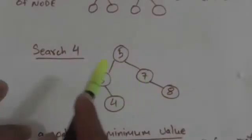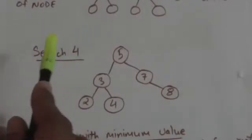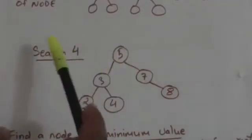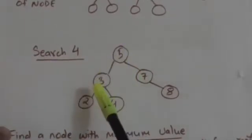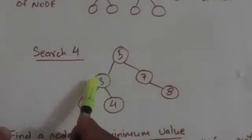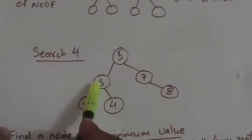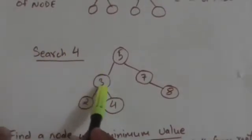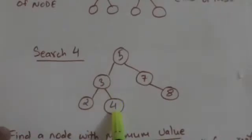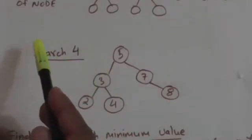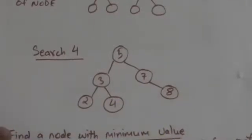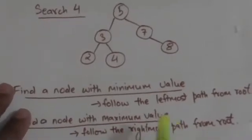Suppose we have to search for a node with value 4 in this binary search tree. First, the root value 5 is compared with 4. Since 4 is smaller than 5, we move to the left child of root, which has value 3. Since 4 is greater than 3, we move to the right child of that node, which has value 4 — equal to the value we are searching for. So we have found the node with value 4.